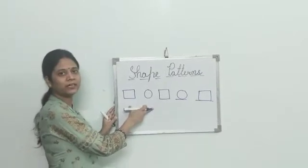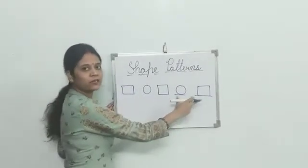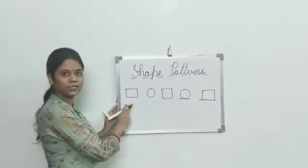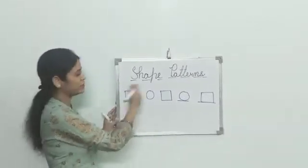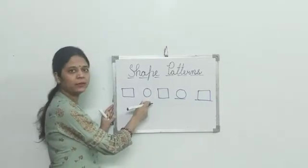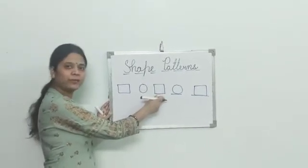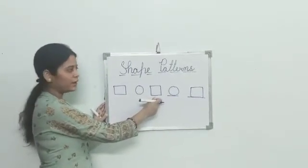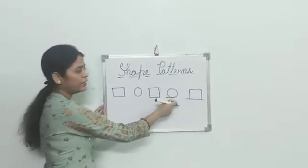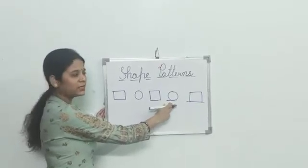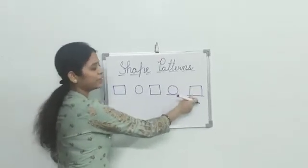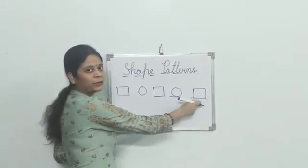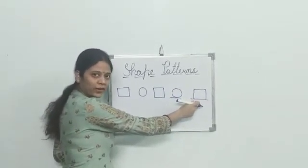And here we have followed the same sequence. First we drew square, then circle, then again square, then again circle, then again square. Okay?